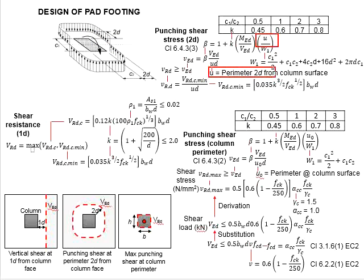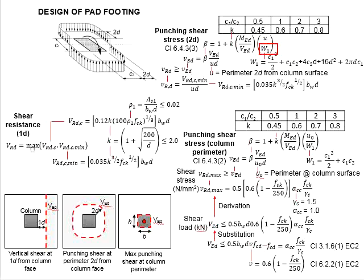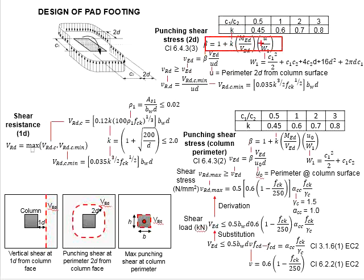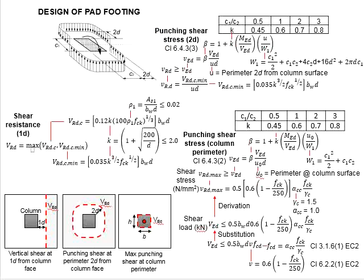The U here is the perimeter at 2D offset distance from the column surface. You will need to compute W1 using this formula, which is constituted of C1, C2, and D. Once you have computed the beta, you are able to define the shear stress acting on the perimeter of 2D from the column surface. This shear stress is to be checked against the shear resistance of the concrete, defined by the minimum shear resistance of the concrete divided by UD. The formula for the minimum shear resistance of the concrete is the same as given here.